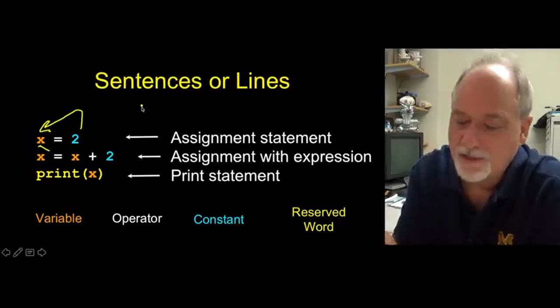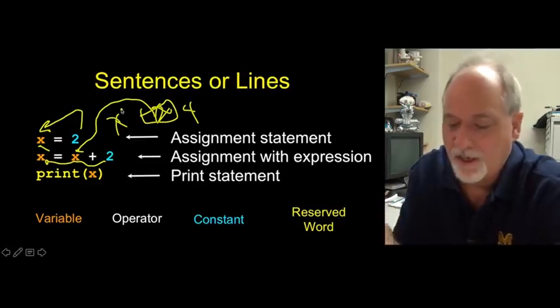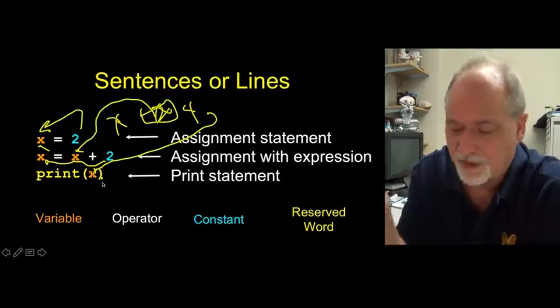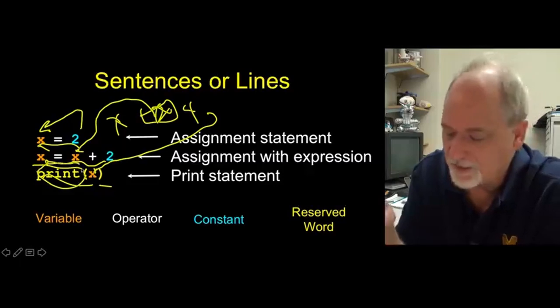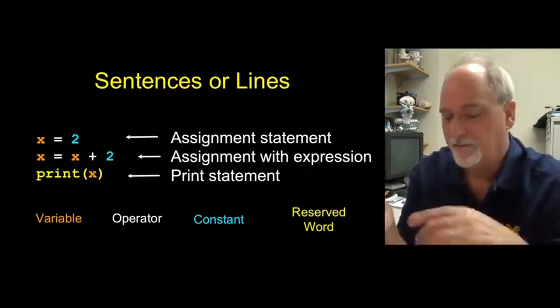So it's Python's job to remember it. This says go, whatever that x is, there's a two in there. Now pull that x back out, add two to it, which makes it four, and stick it back in x. So that makes this a four. So x is a four. And print x says go look up that thing that was an x and print it out.